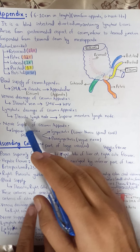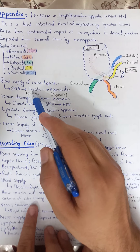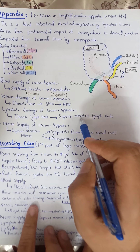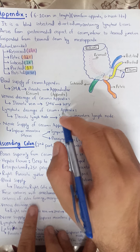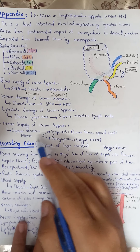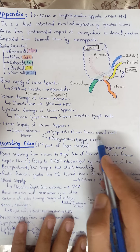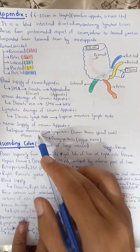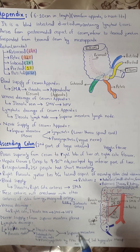For lymphatic drainage, lymph passes through epicolic and paracolic lymph nodes, then to the superior mesenteric nodes. Nerve supply includes the sympathetic fibers from the lower thoracic spinal cord and parasympathetic fibers via the vagus nerve from the superior mesenteric plexus.